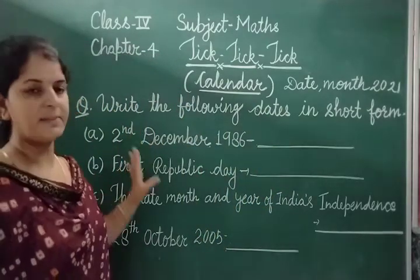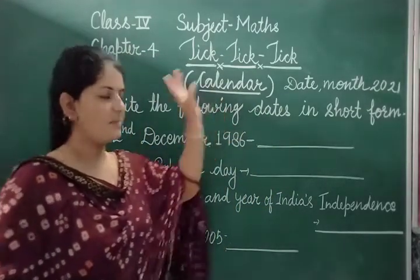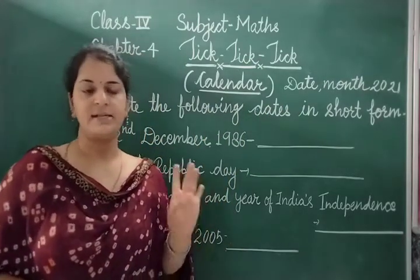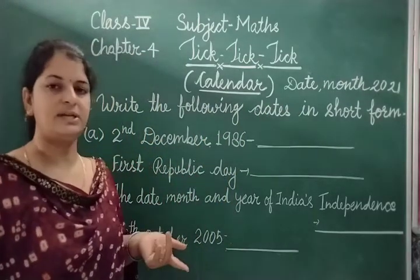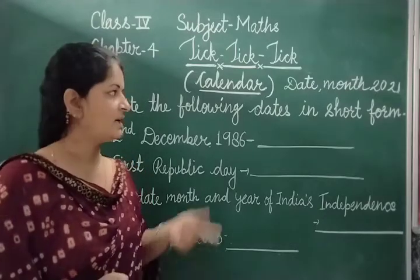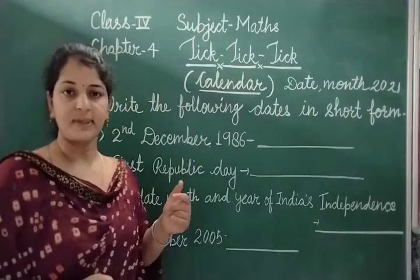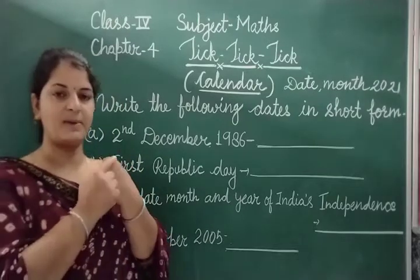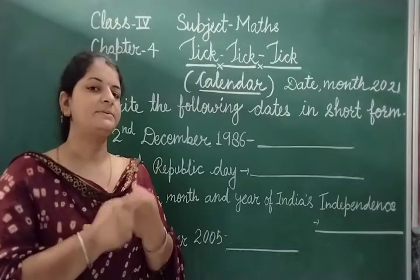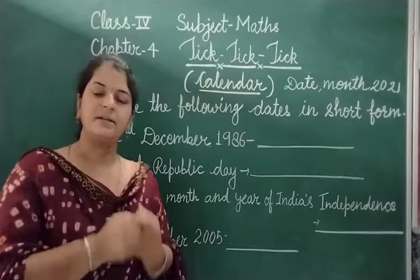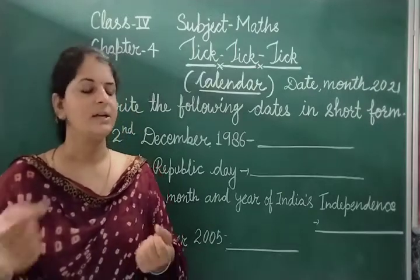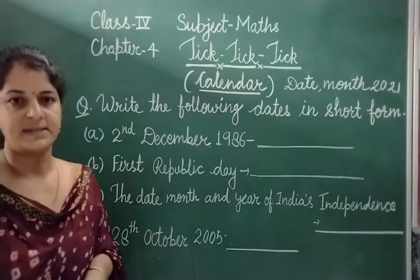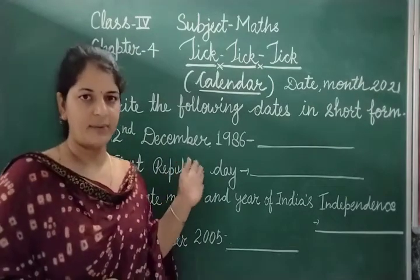Now, you have read in previous class that the total days in each month — like January has 31, February has 28 or 29 days, March has 31, and so on. You would have learned this using the knuckle trick on your hand.